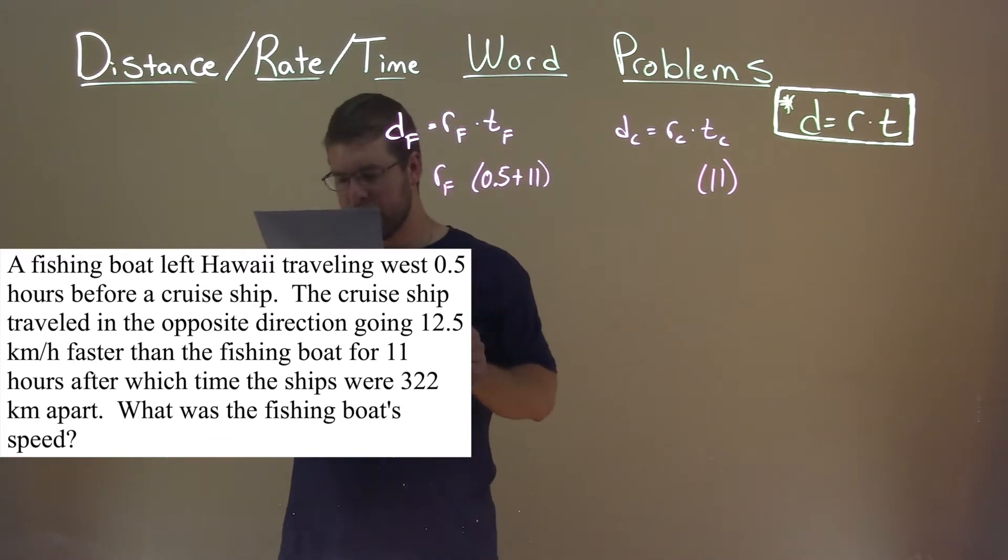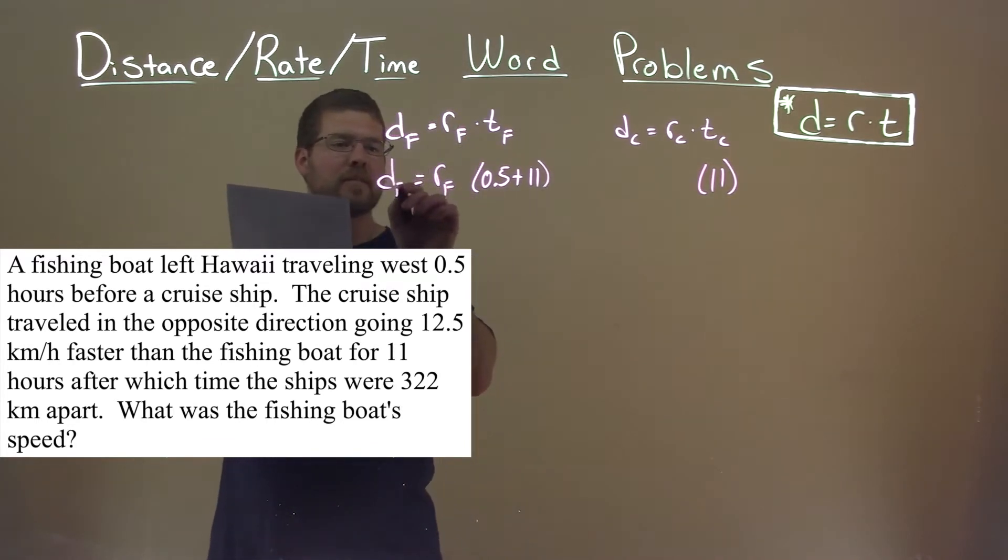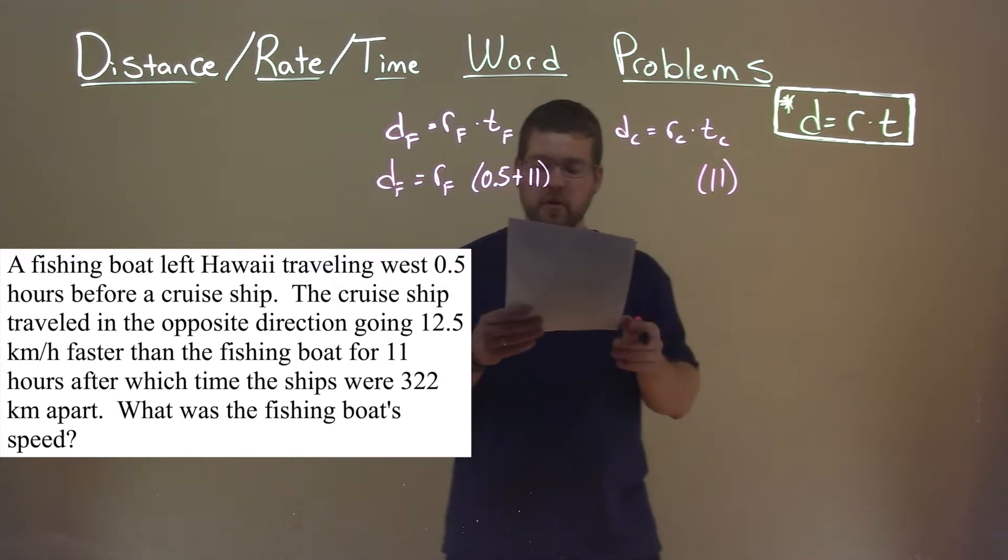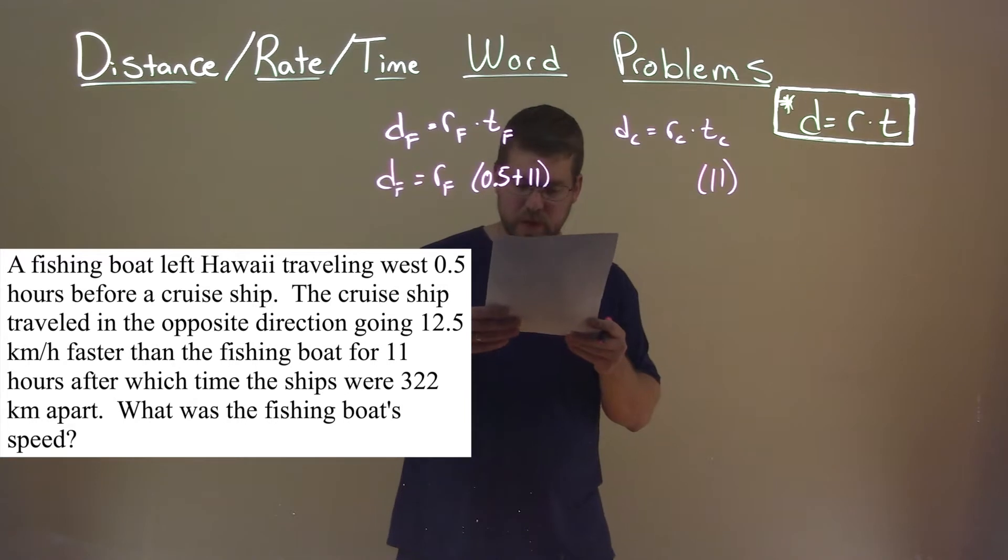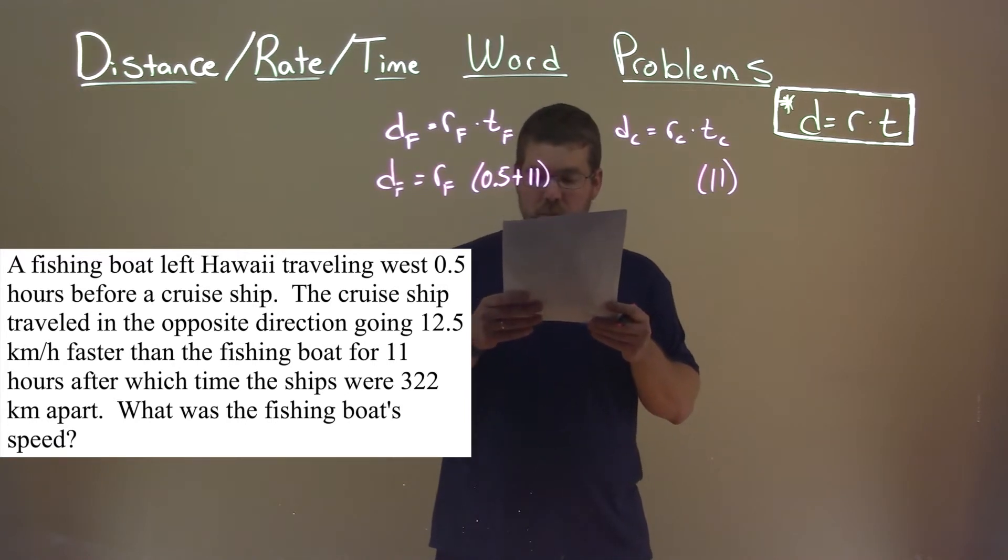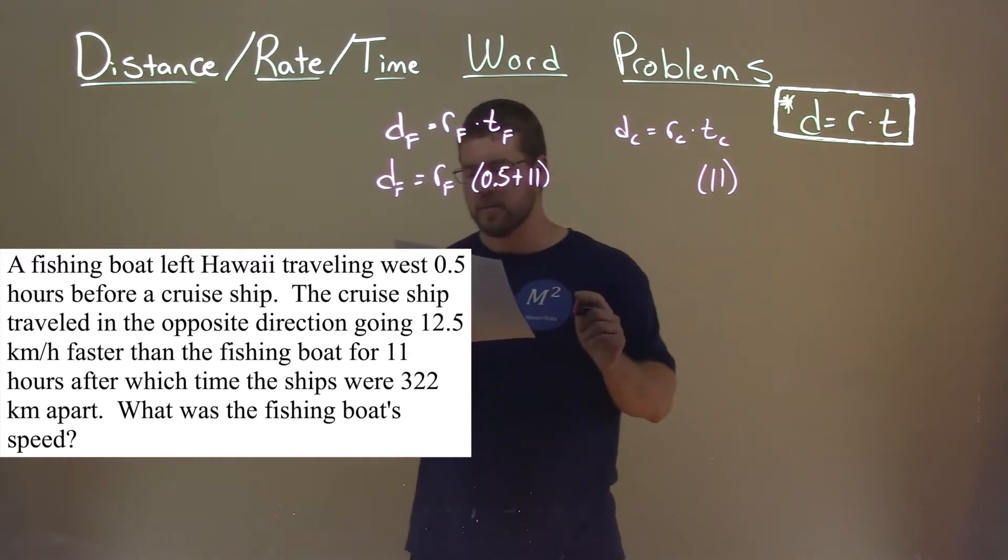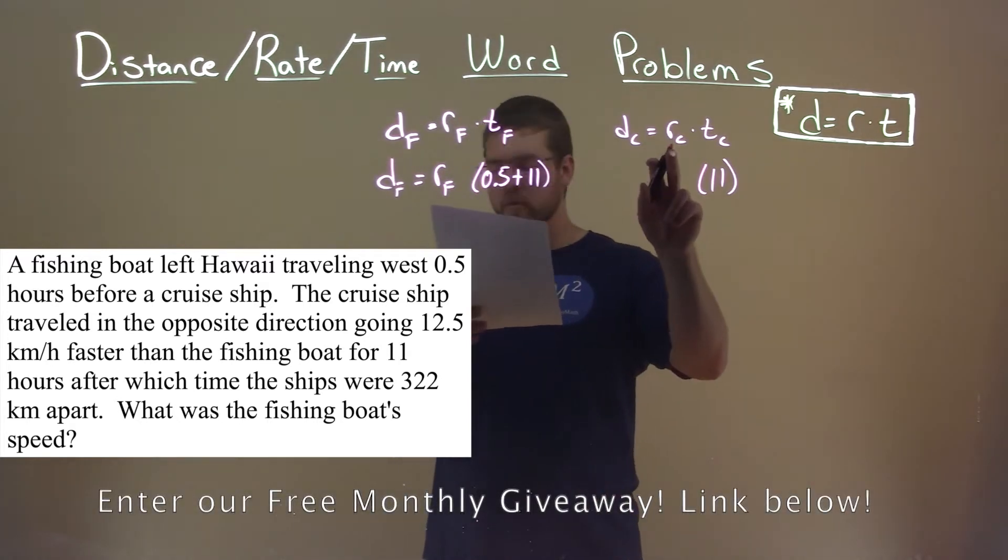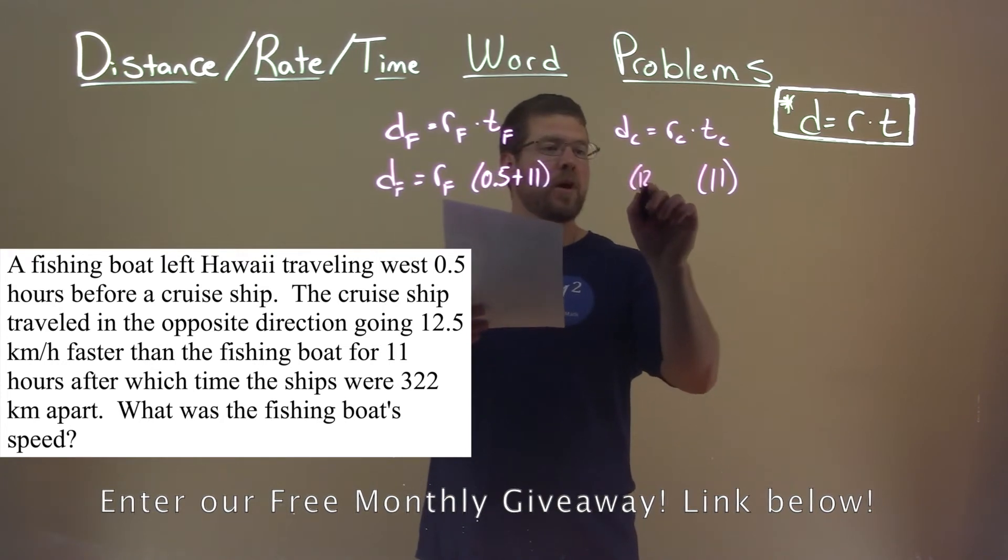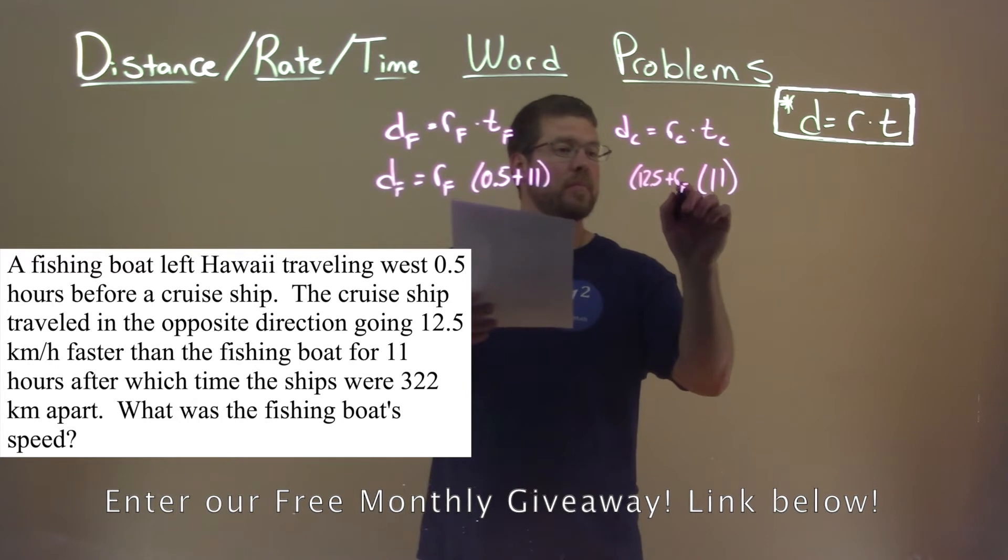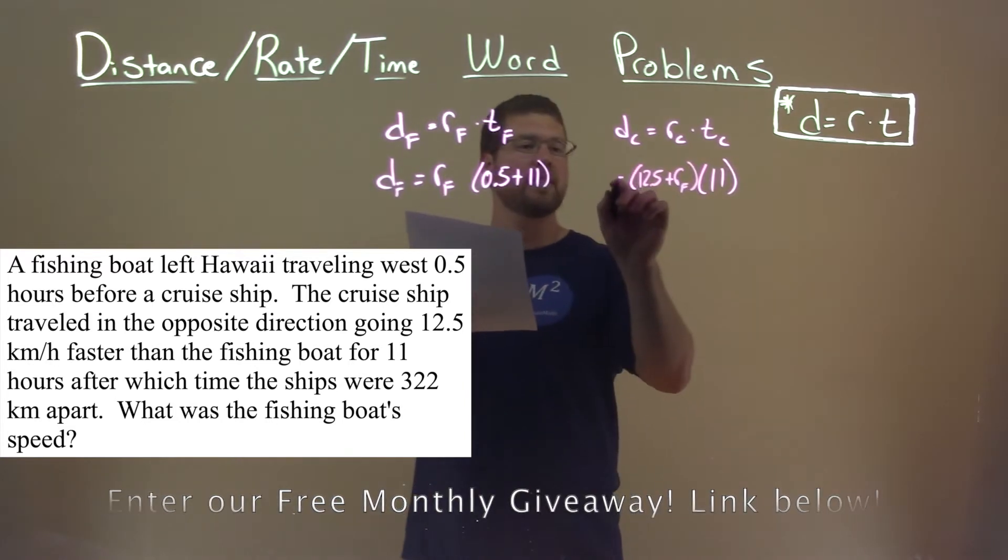We want to find the fishing boat's speed, its rate. So we don't know that here. And we'll bring down the distance. We don't know that either. But the rate of the cruise ship, they give us a clue. They tell us here that the cruise ship traveled in the opposite direction but was going 12.5 kilometers per hour faster than the fishing boat. So the rate of the cruise ship can be written as 12.5 plus the rate of the fishing boat. And that's equal to D sub C.